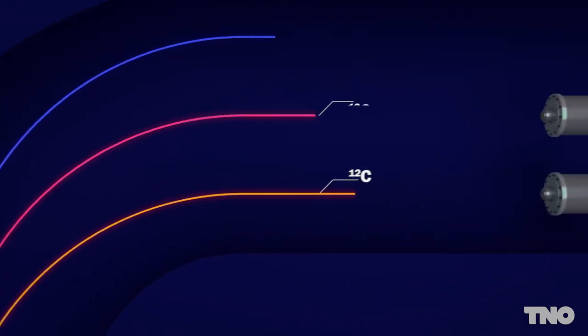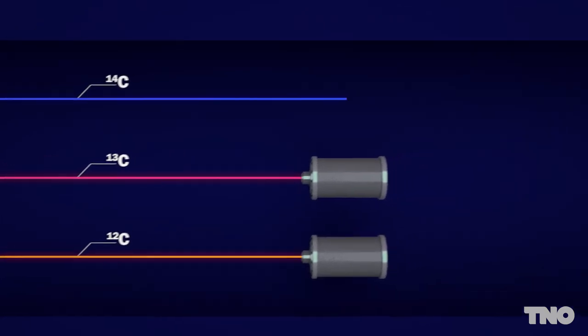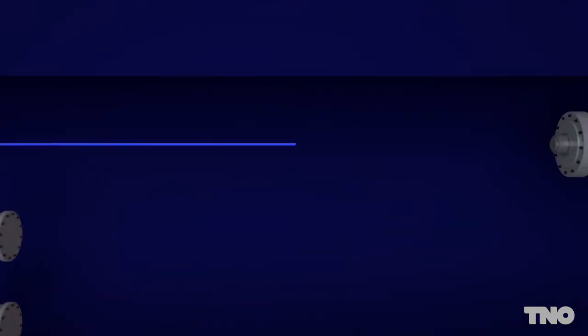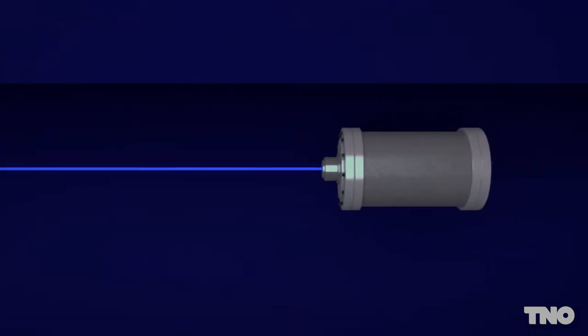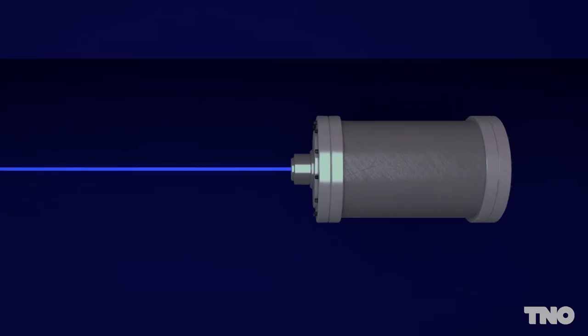The C12 and C13 ions are directed into two separate Faraday cups to be measured, while the heaviest C14 ions are forced into the widest path to a gas-containing barrel. The C14 ions collide with the gas, causing charge releases.